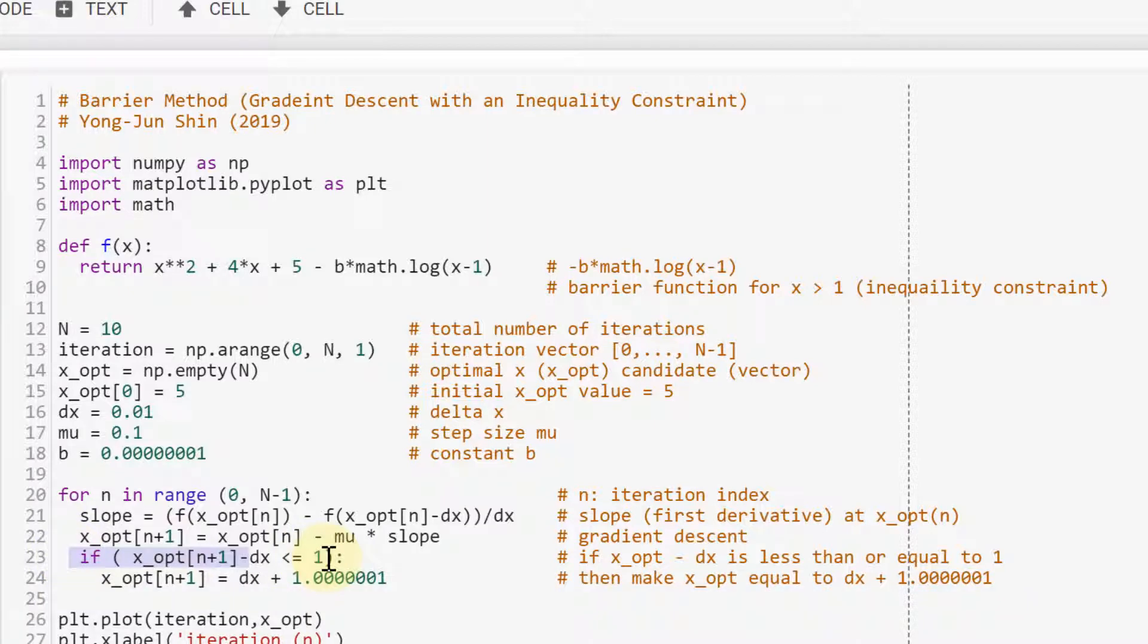We have these two lines of code because x opt of n minus dx corresponds to this, which is this. We know that x minus 1 here must be greater than 0, which means that x must be greater than 1.